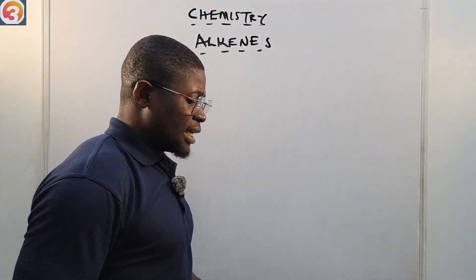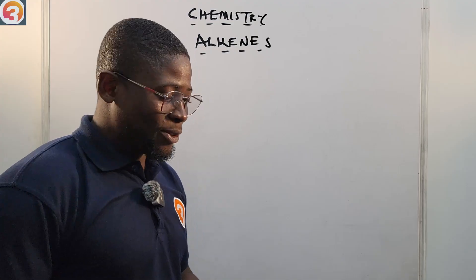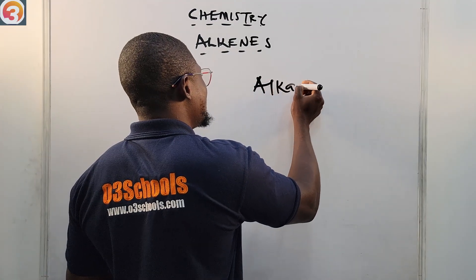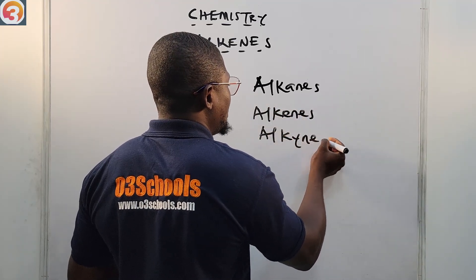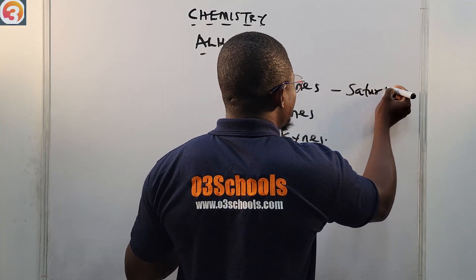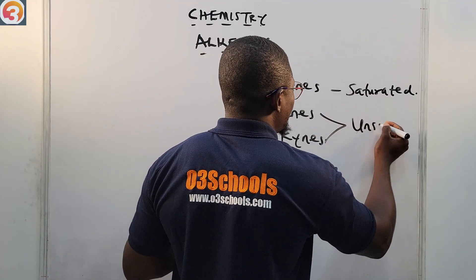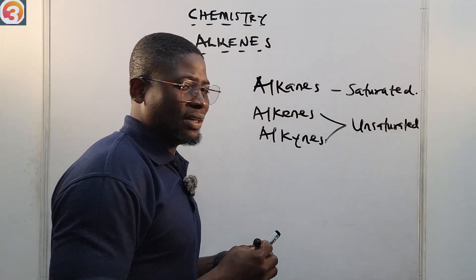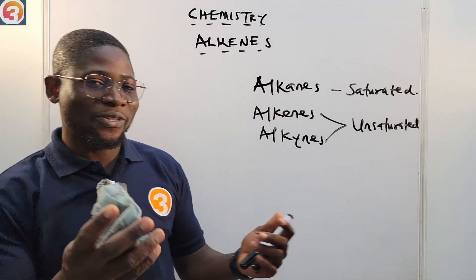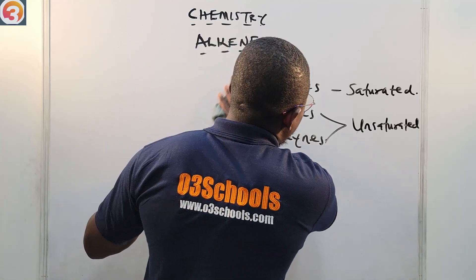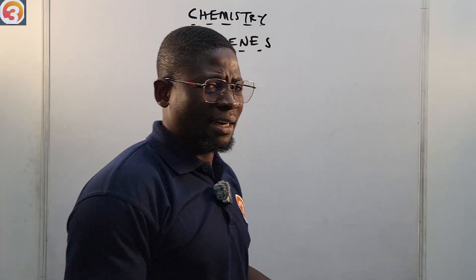Let's go over to the board. Alkenes are unsaturated hydrocarbons — they are unsaturated. Among alkanes, alkenes, and alkynes, alkanes are the only saturated hydrocarbons; the other ones — alkenes and alkynes — are unsaturated. Please take note of that. Alkenes are unsaturated hydrocarbons, and now let's talk about their profile and characteristics.